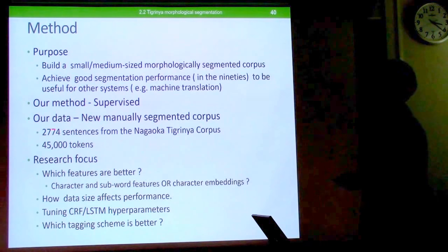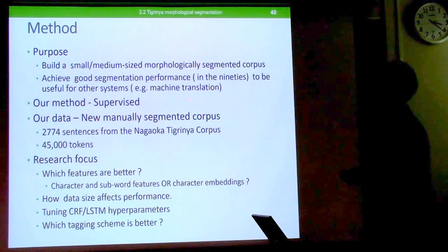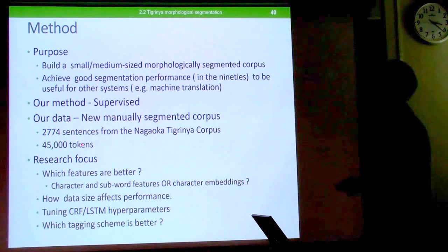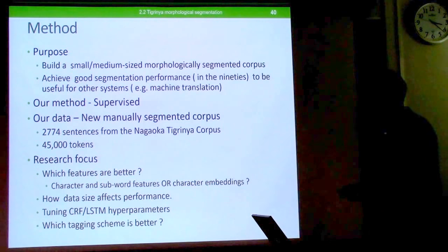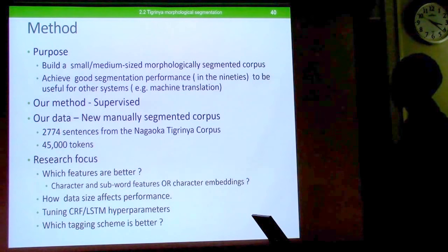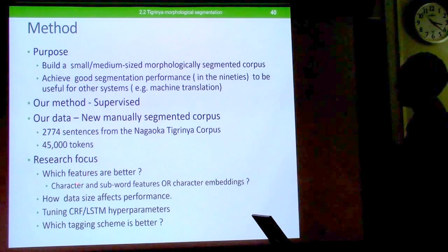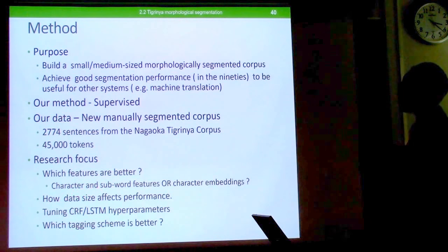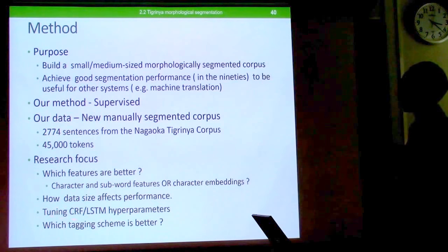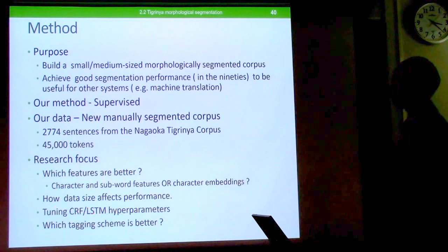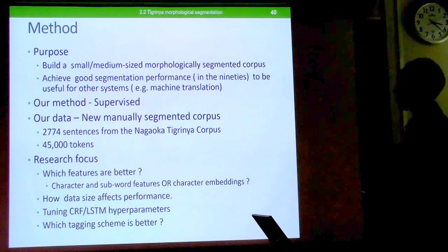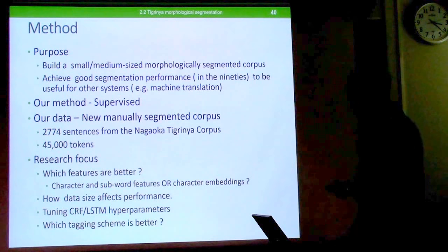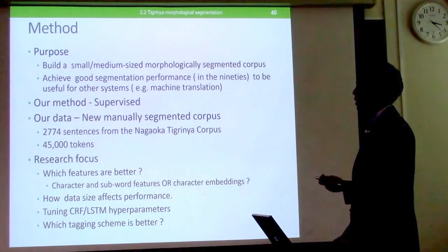We created a new manually segmented corpus containing more than 45,000 tokens. Our research investigates which features are better — character, subword features, or character embeddings — for Tigrinya segmentation, how data size affects performance, how to tune hyperparameters for low-resource scenarios, and which tagging scheme is better for Tigrinya segmentation.